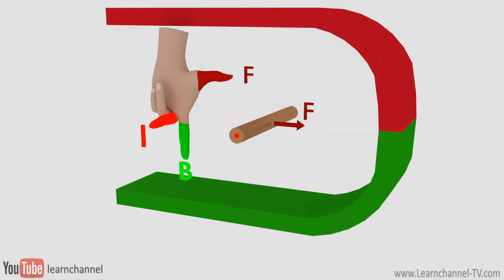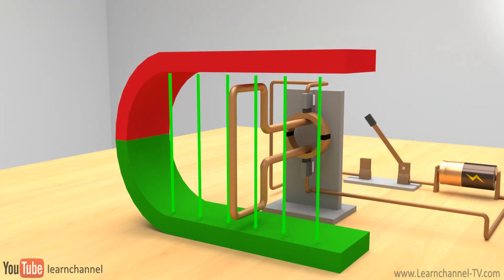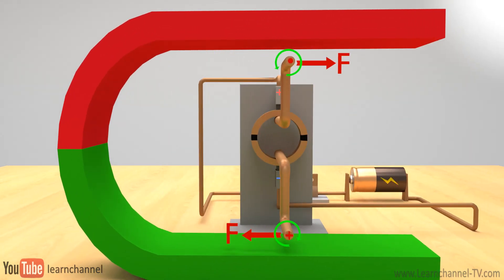The direction of motion can also be described by Fleming's left-hand rule. To the coil, you can apply the principle of the lever. You get a torque.